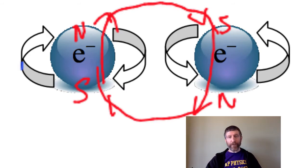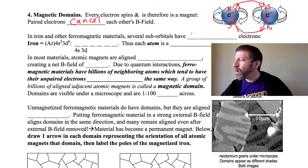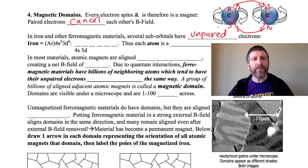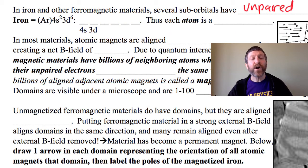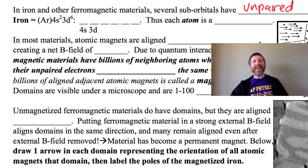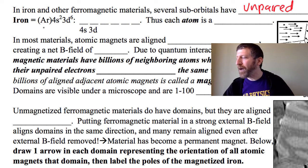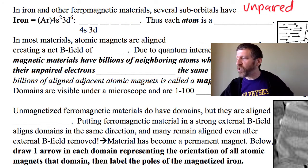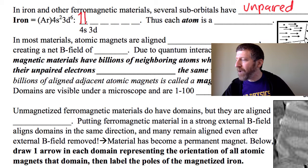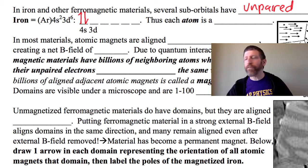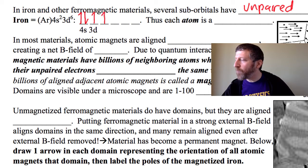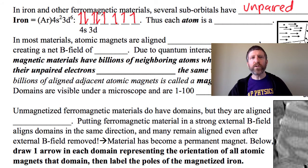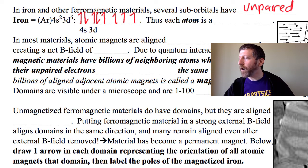However, in iron and other ferromagnetic materials, several sub-orbitals have unpaired electrons. You may have done this in chemistry with the little up and down arrows — what you were actually drawing was the magnetic polarity of those electrons. In iron we have an argon core, then 4s2 and 3d6. We fill in the 4s shell first — spin up, spin down. Then we start filling in the 3d orbital with spin-up electrons: north pole up, four and five, but then we have one that must be spin down.